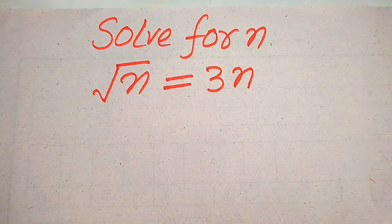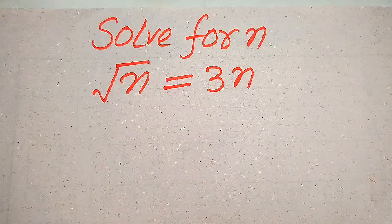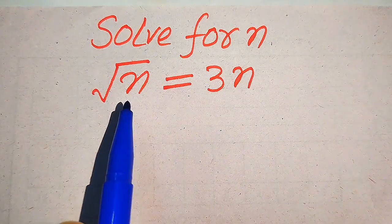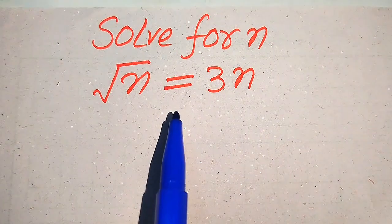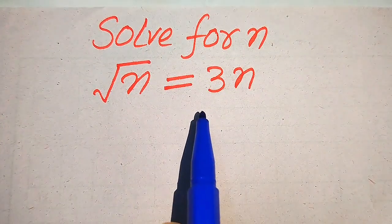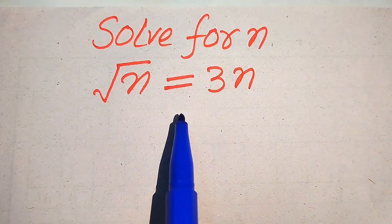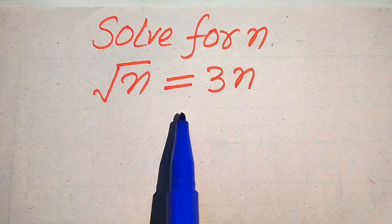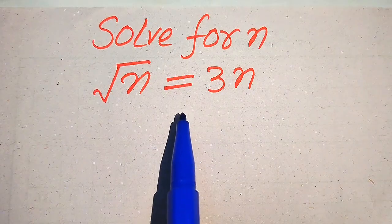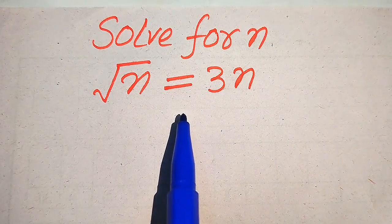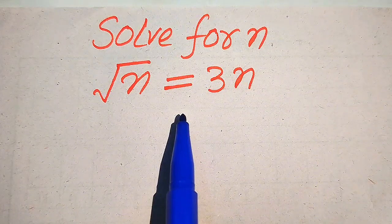Hello everyone. How to solve this problem for the values of n, if we have square root of n equals 3 times of n, and we solve this problem for all the values of n. Here, first we need to find all the roots of this equation, and at the last we will verify which of the roots are solutions of the given equation and which of the roots are extraneous roots.